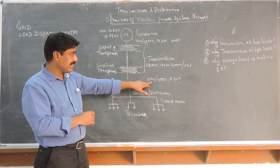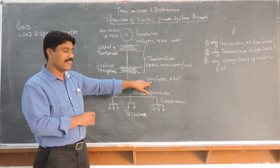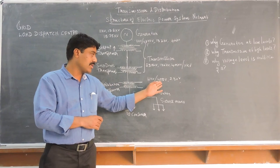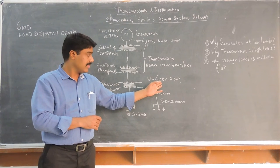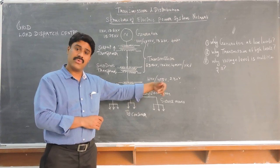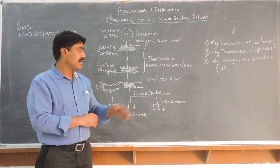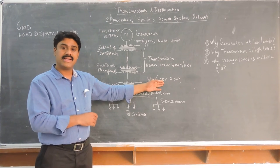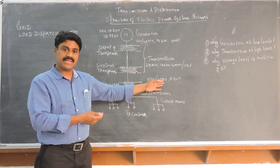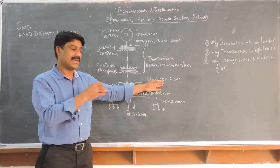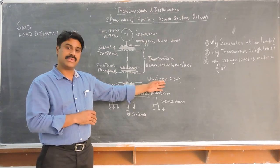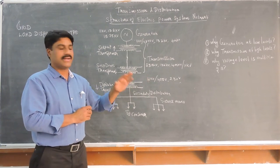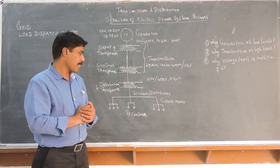At the distribution transformer, the 11 KV level of voltage is split into 400 volts in a three-phase system and 230 volts in a single-phase system. The 400 volts is used for industrial purposes as well as for large consumers. And 230 volts is for domestic purposes in a single-phase system.